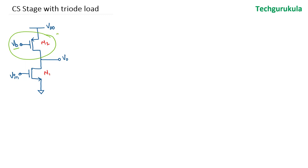But in triode region, the voltage drop across the transistor is going to be small because the resistance itself is small.